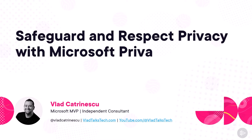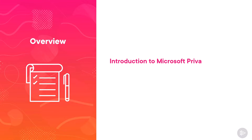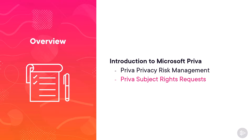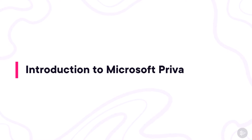Welcome to the third module of this course, in which we will learn how Microsoft Priva can help us safeguard and respect privacy in our organization. This module will be all about introducing Microsoft Priva and its two different solutions: Priva Privacy Risk Management and Priva Subject Rights Requests, and we will learn how each one of them can help. By the end of this module, you'll understand how Microsoft Priva can help your compliance team be more efficient when it comes to privacy and personal information. Let's start with an introduction to Microsoft Priva.